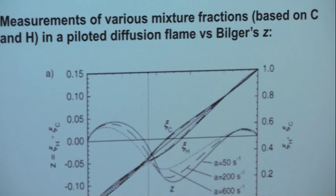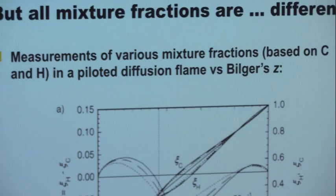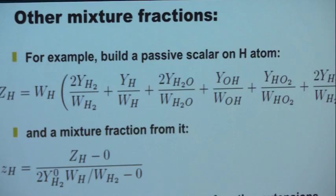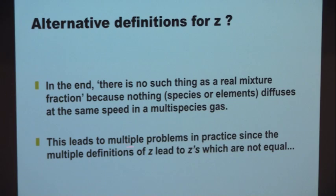As I said yesterday, you don't want to be a perfectionist. If this model allows you to make the computation, you just have to be conscious of its limits. For example, if you have a hydrogen flame, talking about mixture fraction is going to be very difficult. If you have a methane flame, methane has a Lewis number of about 0.9 — saying it's equal to unity is probably reasonable. But you have to be aware this is an approximation. There is no such thing as a real mixture fraction because the diffusion of all species is never equal, so in practice we may have different Z values.